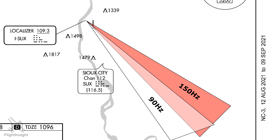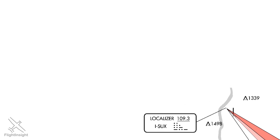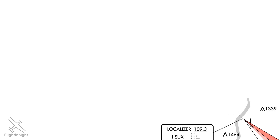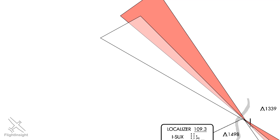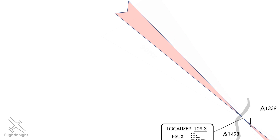In addition to broadcasting this signal on the approach side of the runway, which is known as the front course, the localizer antenna also broadcasts the same signal in the opposite direction, with the 90 and 150 Hz transmissions on opposite sides. Where these transmissions overlap is known as the back course. Both the front course and back course are represented by these feather symbols, and the side with the 150 Hz transmission is given a shading like this.